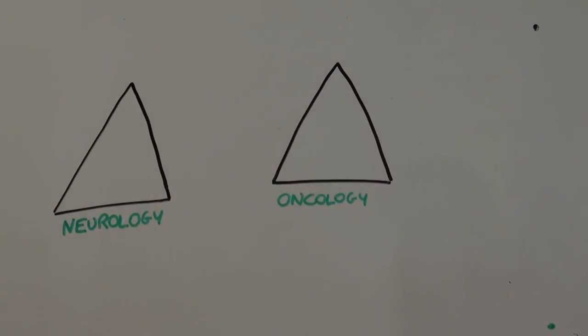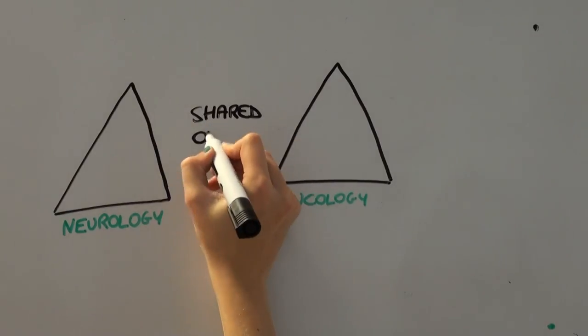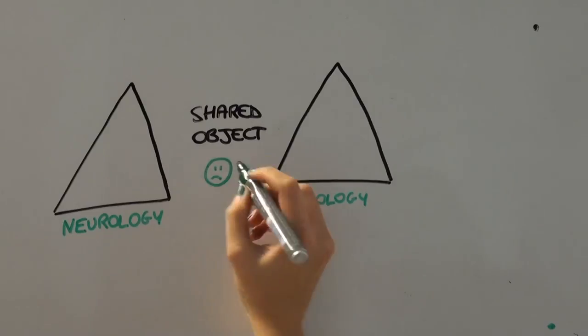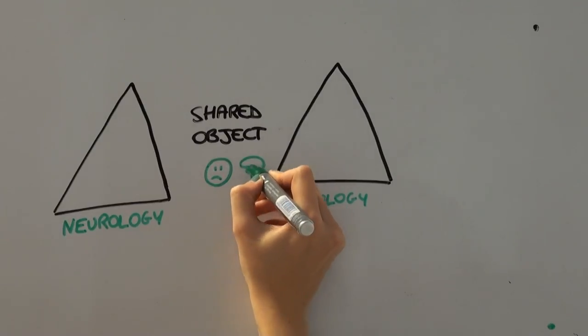Second, when two or more activity systems are interacting with each other, they will have a shared object. If we go back to our example, this could be a patient who has a brain tumor. The two activity systems will have to work together to solve this problem.